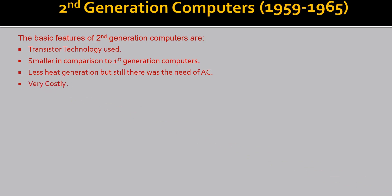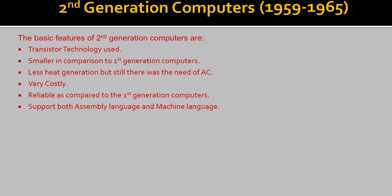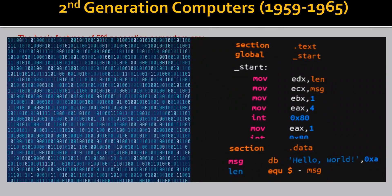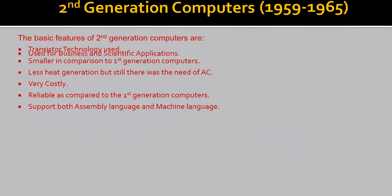2nd generation computers were also very costly. These were more reliable as compared to 1st generation computers. They supported both machine language and assembly language — on the left-hand side is machine language and on the right-hand side is assembly language. These were also used for business purposes.